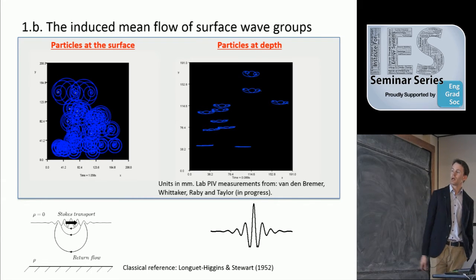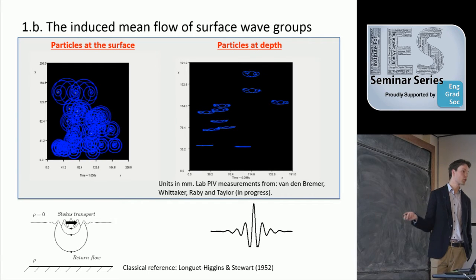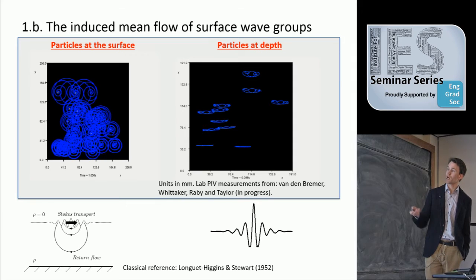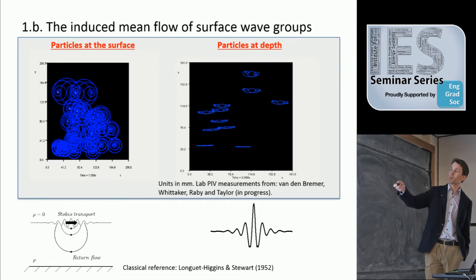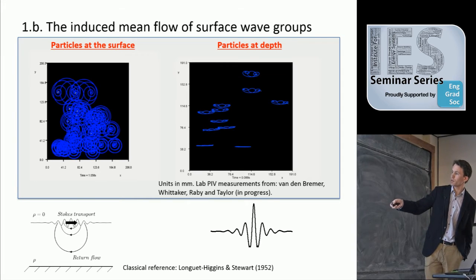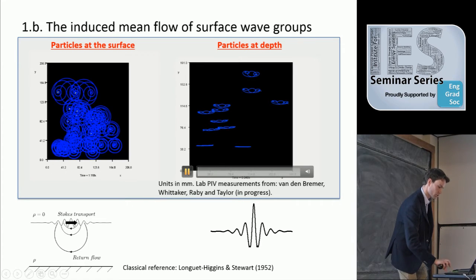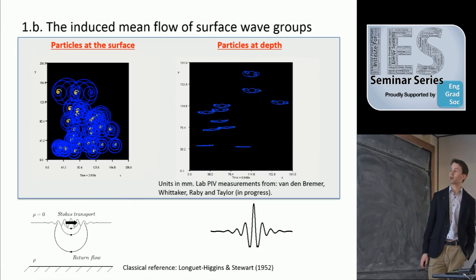I'd like to show some lab measurements made in Plymouth using particle tracking velocimetry. This is essentially a light sheet with high-quality cameras that allows us to track some of these particles. I'm going to show results for a particle at the surface, dominated by Stokes drift, and a particle at depth. The X and Z dimensions don't really matter for this illustration. I'm going to turn on the time marching of these experimental results, and there are a few different orbits within view of our camera.